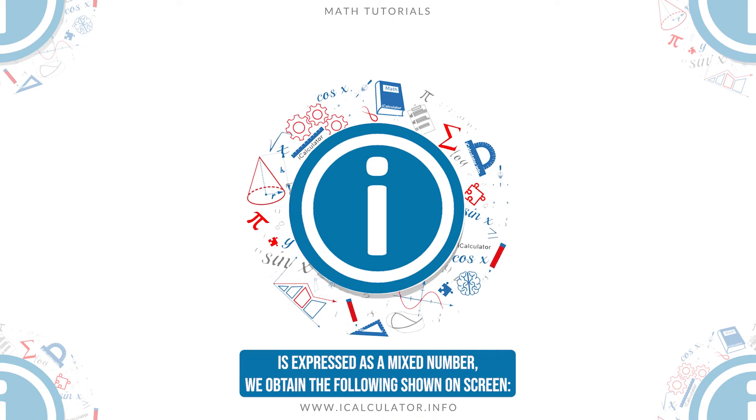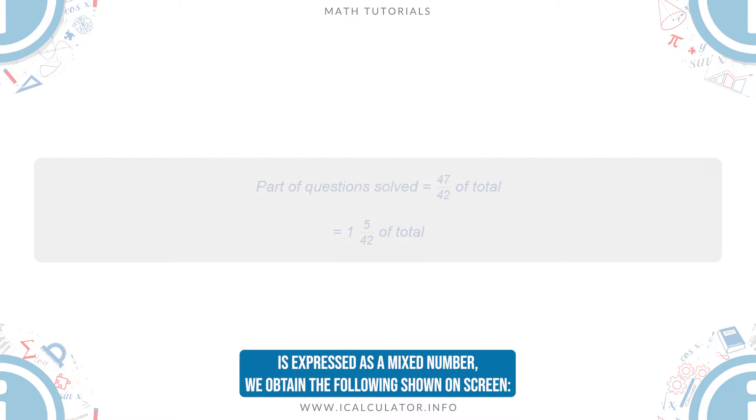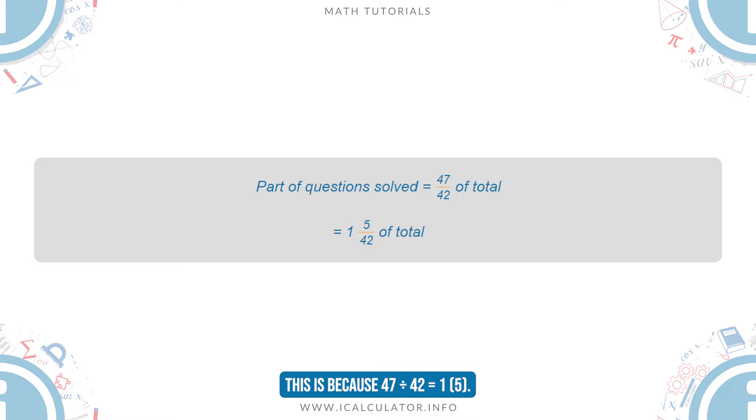When this amount is expressed as a mixed number, we obtain the following shown on screen. This is because 47 divided by 42 is equal to 1, with a remainder of 5.